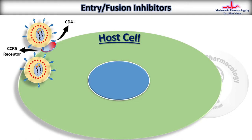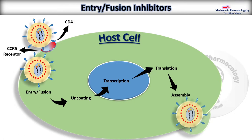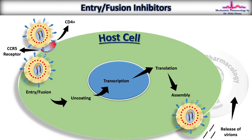This fusion or penetration is caused by glycoprotein 41. After entry, uncoating occurs, followed by transcription, translation, viral assembly, and release of virions to infect other host cells. This is the common mechanism of HIV entry into the host cell. The most important step is the penetration or fusion, which is caused by glycoprotein 41.